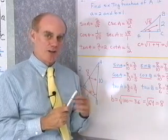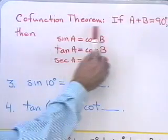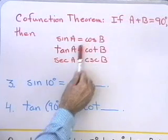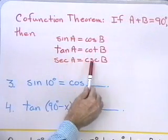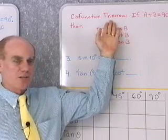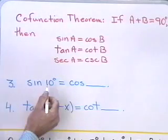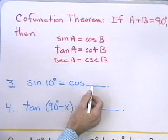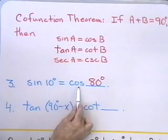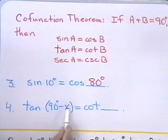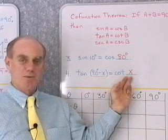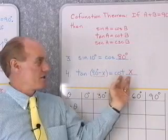This is called the co-function theorem. If A plus B equals 90 degrees — that is, A and B are complementary angles — then sine of A equals cosine of B, tangent of A equals cotangent of B, and secant of A equals cosecant of B. The trigonometric function of an angle equals the co-function of its complement. For example, sine of 10 degrees equals cosine of 80 degrees, and tangent of 90 minus X equals cotangent of X.